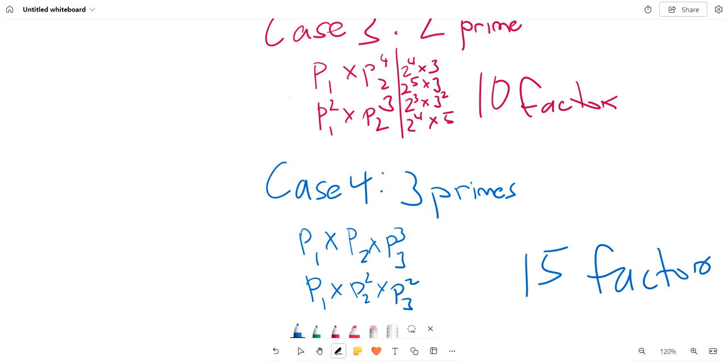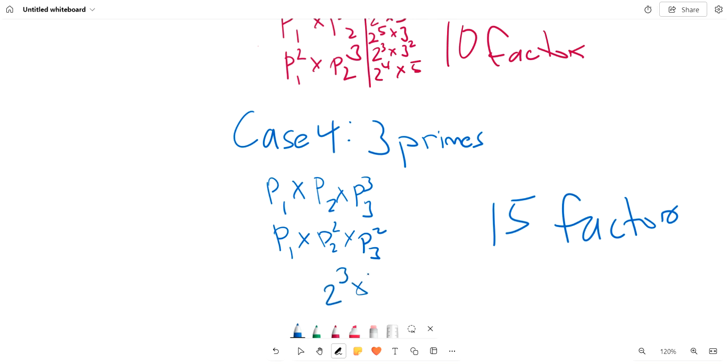For case 4, none of them work because they all exceed 100. For example, 2 cubed times 3 times 5 equals 120, but we want less than 100. So we have 0 numbers from this case and we can cross this out.